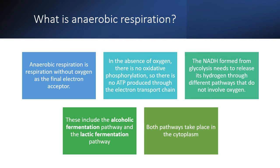Remember that at the end of the electron transport chain, oxygen was the final electron acceptor. When oxygen is not present, the cell cannot undergo oxidative phosphorylation, which means there would be no Krebs cycle either, because there's no need if the NADH and FADH₂ will not be used properly. Instead, the NADH made from glycolysis releases its hydrogen through different pathways that do not involve oxygen. The two pathways are the alcoholic fermentation pathway and the lactic fermentation pathway. Both happen in the cytoplasm and do not involve the mitochondria.